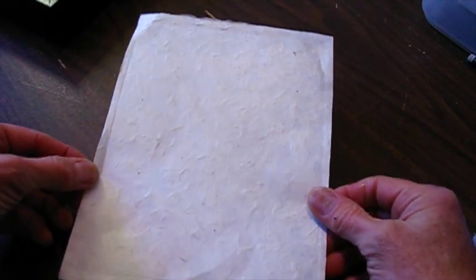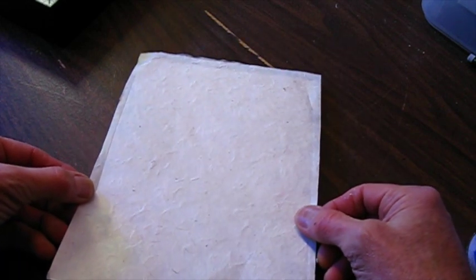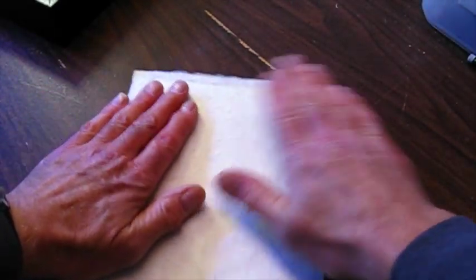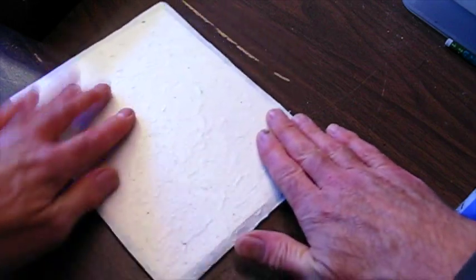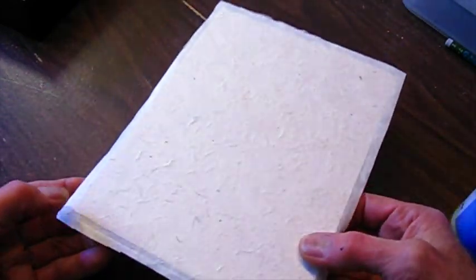With the adhesive on the foam core, set the piece of paper where I want it, and then smooth it out. Make sure that it's all pressed into the surface. And we'll let that dry for a little bit.